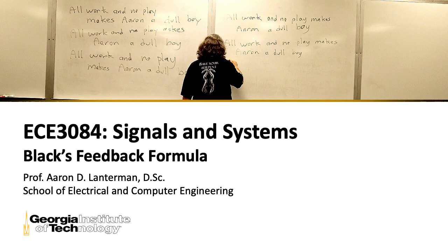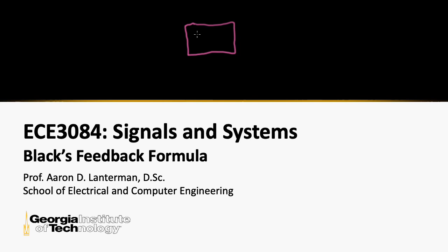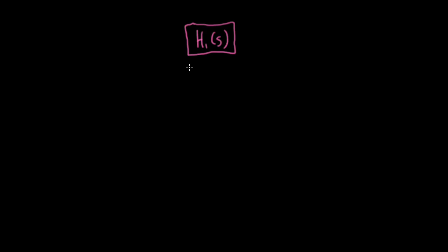Suppose we have a linear time invariant system with a system function, aka transfer function H1 of S, and we have another such system with transfer function H2 of S. Let's denote the output of H1 of S as Y(t), and we're going to do something a little strange with H2. What we're going to do is we're going to take the output of H1 and actually make that the input of H2. So the input of the whole thing, X of t, doesn't go into H1 directly. It's going to go into this little summer unit, and the output of that summer unit is what goes into H1.